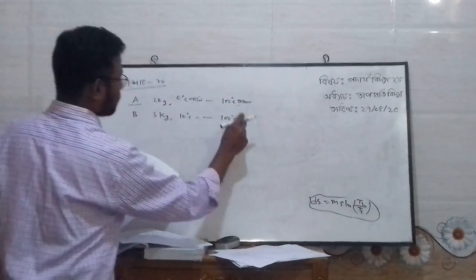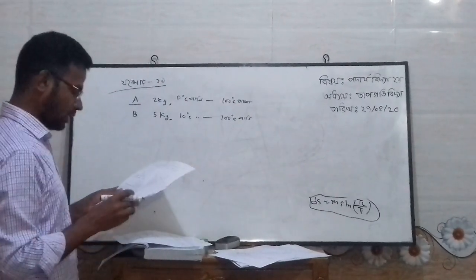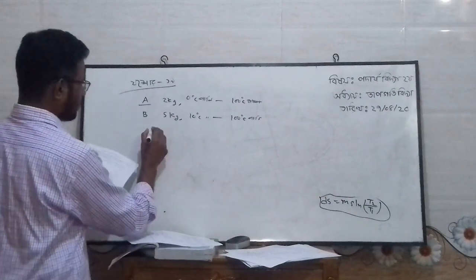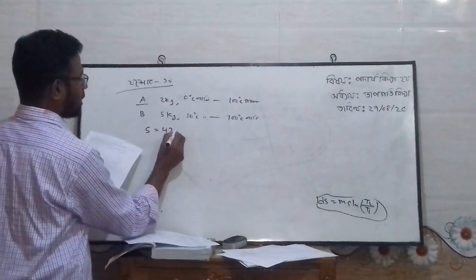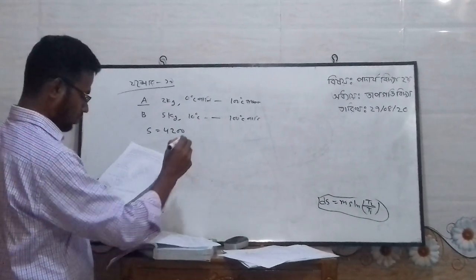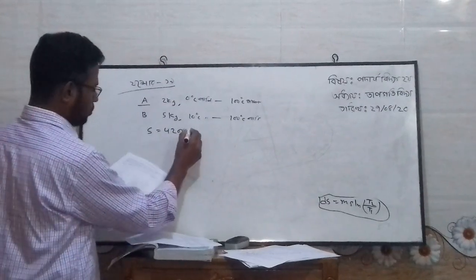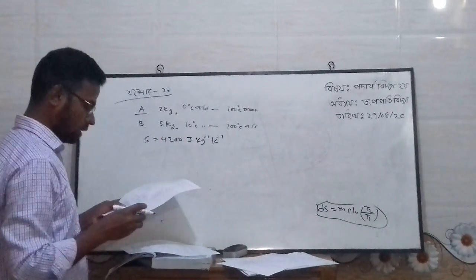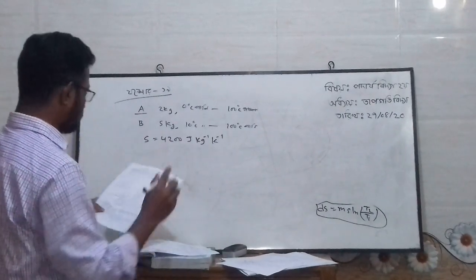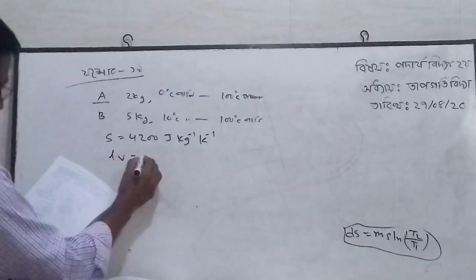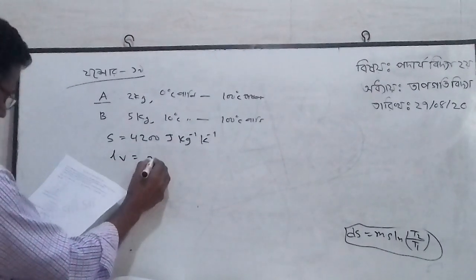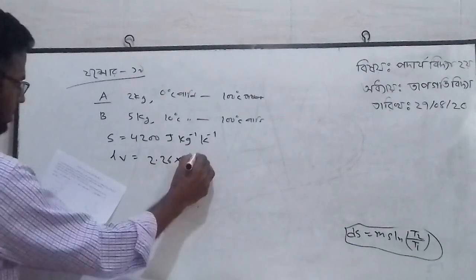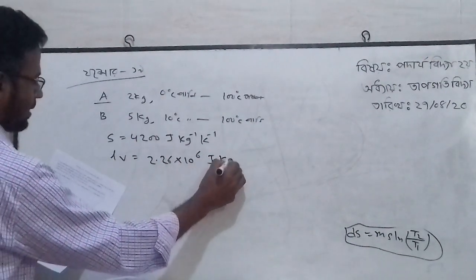Water at 100 degrees is heated and converted to steam. The latent heat value is 2.26 × 10³ Joule per kg, at a temperature measured in Kelvin.